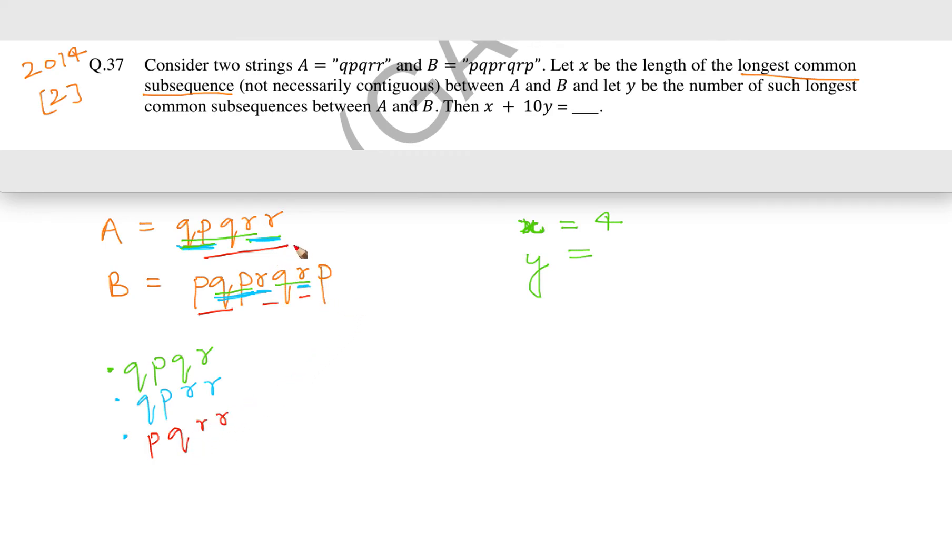Now, there are no other possibilities. Only three longest common subsequences—that is, only three common subsequences of length 4—are possible, and that is why the value of Y is 3. So the value of X plus 10Y is going to be 4 plus 10 times 3, which is 34. So the answer is 34.